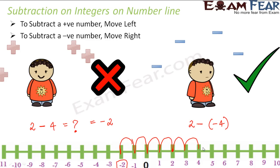1, 2, 3 and 4. 4 jumps towards right and you arrive at 6. So 2 minus minus 4 would be plus 6. So this is how you can perform subtraction of integers on number line.